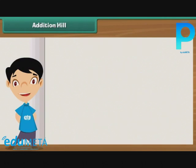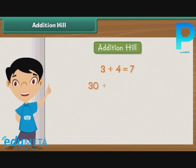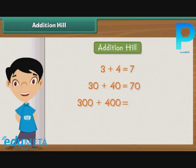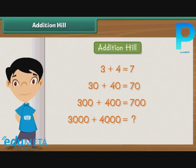There is a very interesting pattern in addition called Addition Hill. We know that 3 plus 4 is 7. 30 plus 40 is equal to 70. 300 plus 400 is equal to 700. And 3000 plus 4000 is equal to 7000. As this pattern gives a hill-like structure, we call it the Addition Hill.